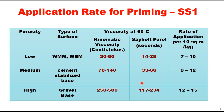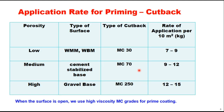The application rate when using cutback is different from emulsion, and here also it depends upon the porosity of the base — low, medium, and high. The type of cutback recommended is MC30 or MC70. When the surface is open, a higher viscosity MC grade is used for prime coating. The rate of application per 10 square meter is 7 to 9 kg for WMM or WBM base, and 9 to 12 kg per 10 square meter for cement stabilized base.